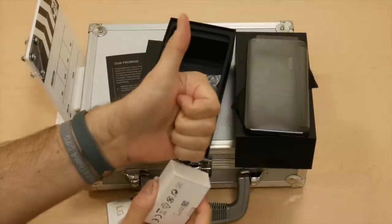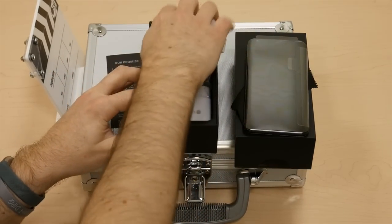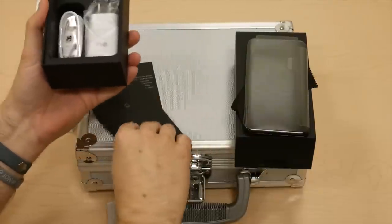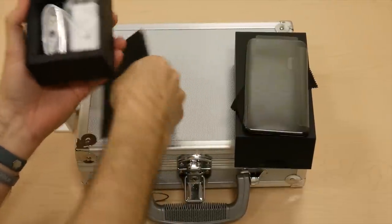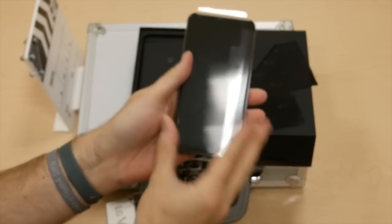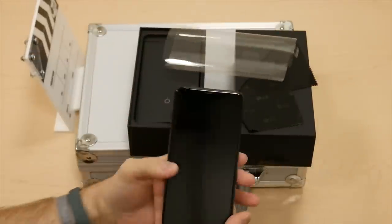So yeah, that's pretty much everything inside the box. Let's put that away for a moment and come to the star of our show, which is the V30 itself. We have the black device as you can see.